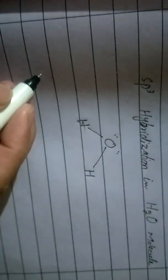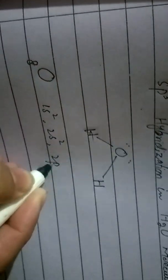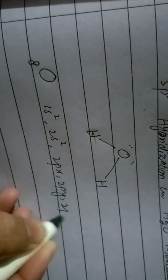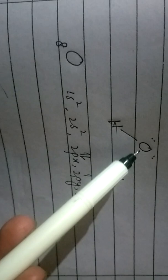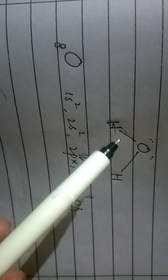How the sp3 hybridization in water molecules can be described. The water molecule's structure has oxygen as the central atom with two hydrogens and two lone pairs of electrons. Oxygen has atomic number 8 with electronic configuration 1s2 2s2 2px2 2py1 2pz1, giving it two unpaired electrons that can form covalent bonds with the 1s orbital of hydrogen atoms.